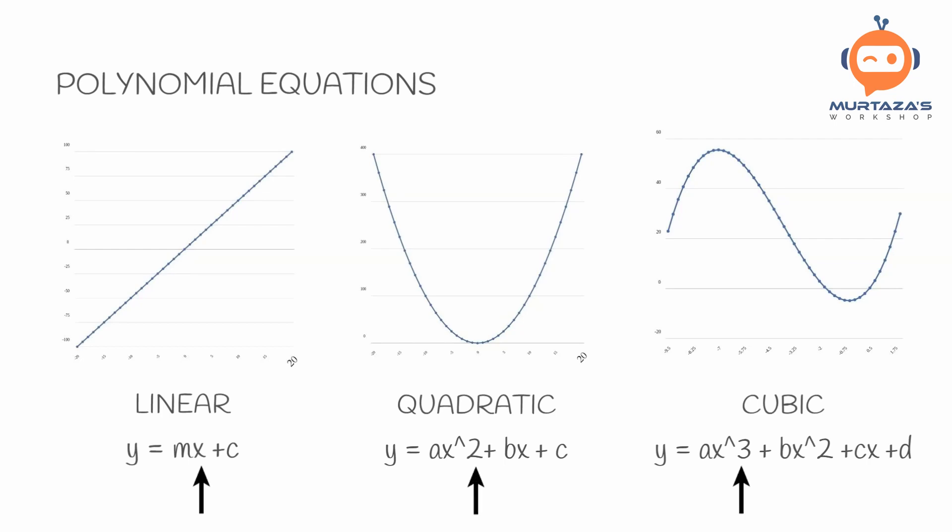So the order is basically the maximum power of the x variable. Here, you can note that the first order has no curves. The second order has a single curve, and the third order has two curves. Another way you can look at this is how many times the graph crosses the x-axis. For linear, it's first order, so it crosses one time. For quadratic, it's second order, so it crosses two times, and for cubic, it's third order, so it crosses three times.